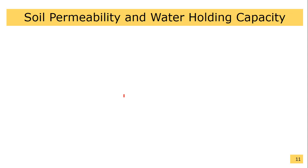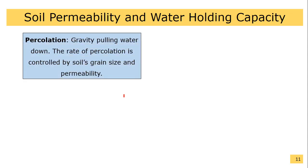Soil Permeability and Water Holding Capacity. Percolation is gravity pulling water down. The rate of percolation is controlled by soil's grain size and permeability.